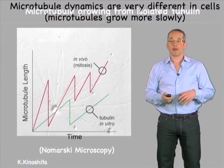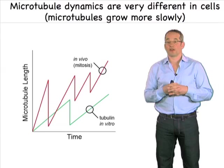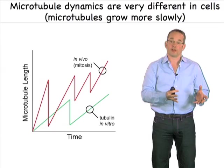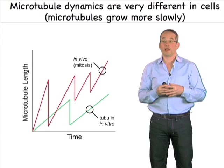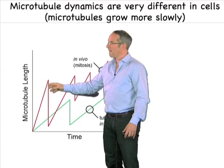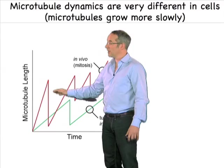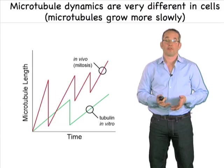Microtubules in vivo, in the cell, have very different behavior than microtubules in a test tube. The key difference is that for any particular tubulin concentration, microtubules grow faster in vivo than they do in a test tube — sometimes 10 times faster than you expect. They also tend to turn over more quickly in cells. What I've illustrated here is an interesting behavior known as dynamic instability, where you can see the microtubule grows, and at some stages it transitions to a shrinking state, and then starts growing again. Both in vivo and in vitro, microtubules are turning over by dynamic instability, but they're much more dynamic in cells than in a test tube.